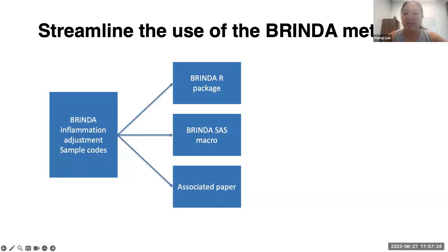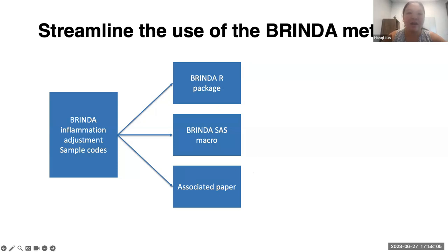During the early stage of BRINDA, users faced a steep learning curve to apply the BRINDA inflammation adjustment method. They needed to read through multiple academic papers to understand the method, and then either construct their own BRINDA adjustment code or modify existing sample code to work with their specific dataset. It was a complex process. We recognized this challenge and took steps to streamline the process. At the beginning, we shared sample code, and now we have developed two valuable tools: a BRINDA R package and a SAS macro, along with their associated papers.